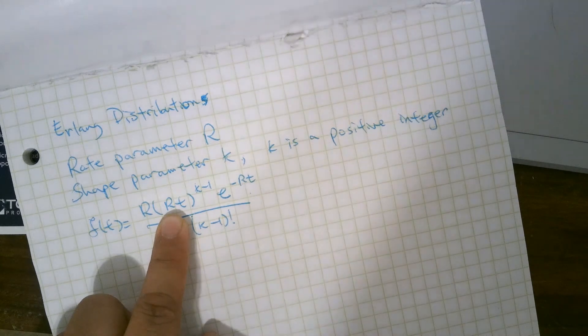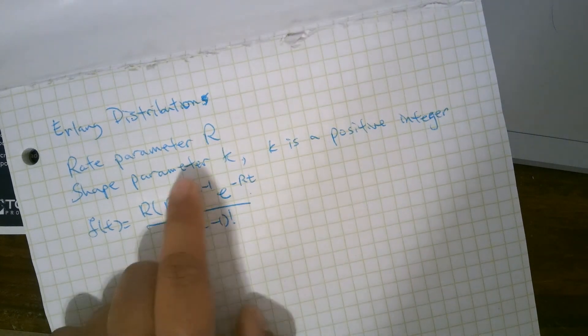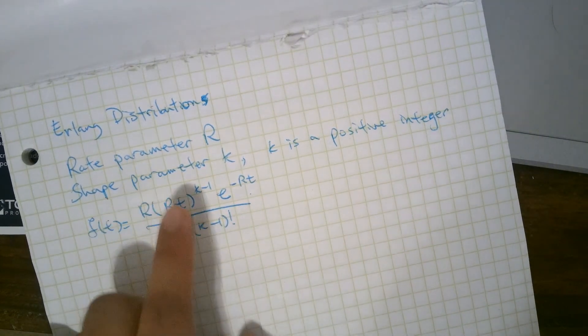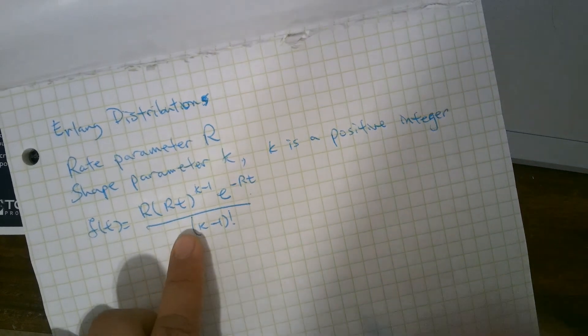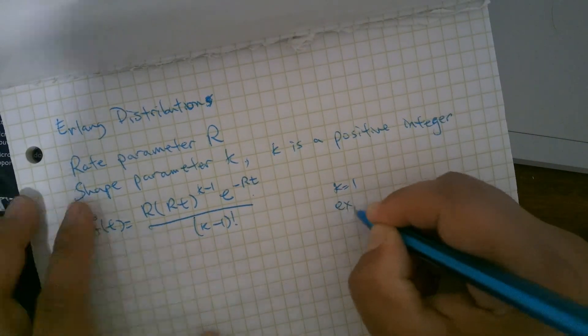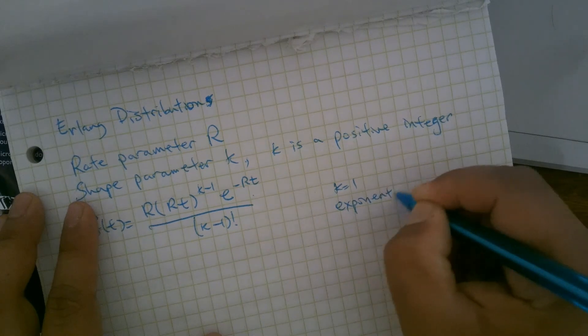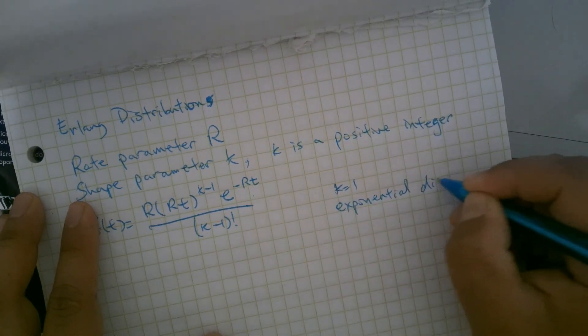And notice when K equals 1, then that's T to the 0, so it's just a constant. So when K equals 1, we have our regular old exponential distribution, which gives us our Poisson stats from before.